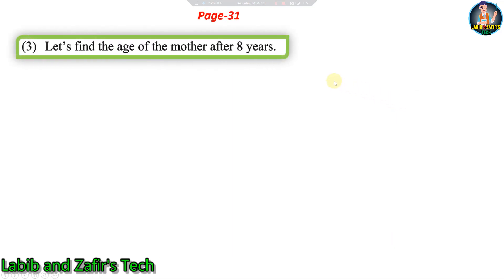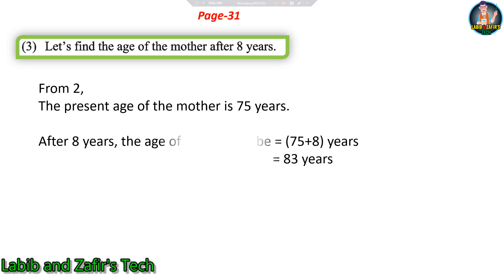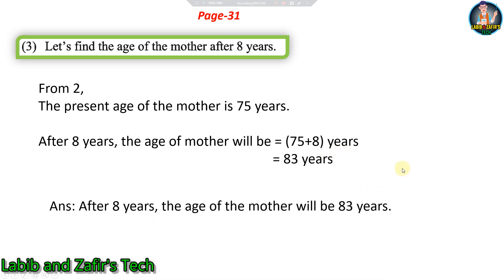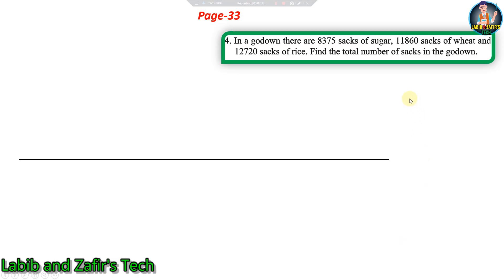Third sub-question: What will be the age of the mother after eight years? From sub-question two, the present age of the mother is 75 years. We simply add 8: 75 plus 8 = 83 years. Answer: after eight years, the age of the mother will be 83 years.